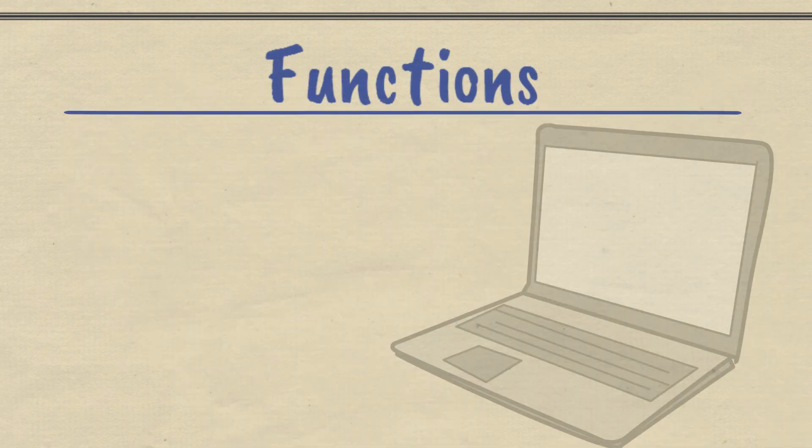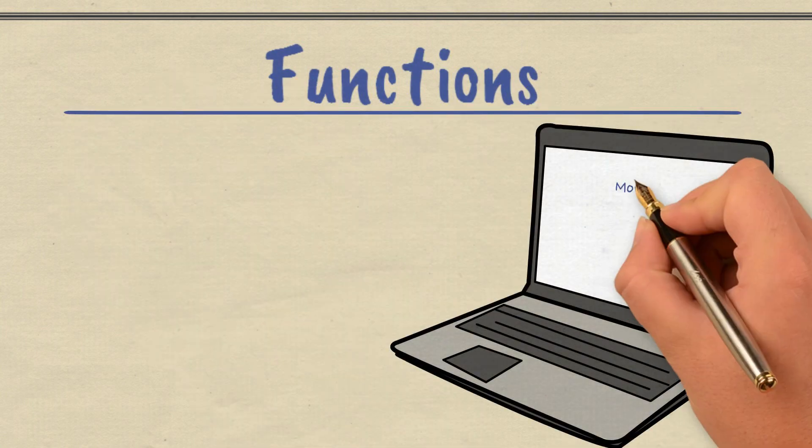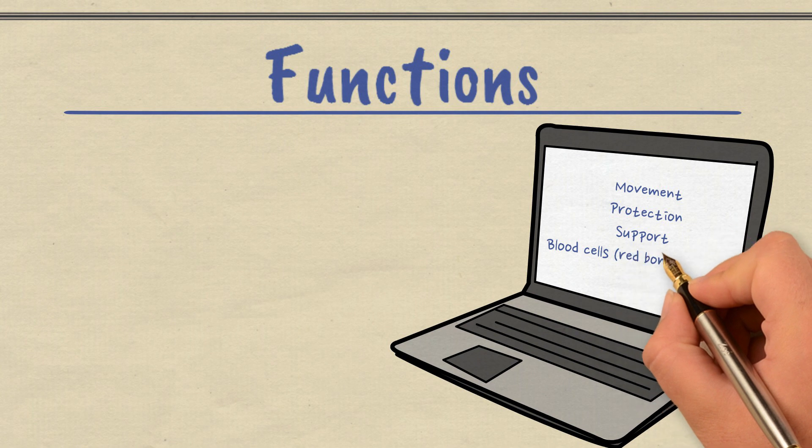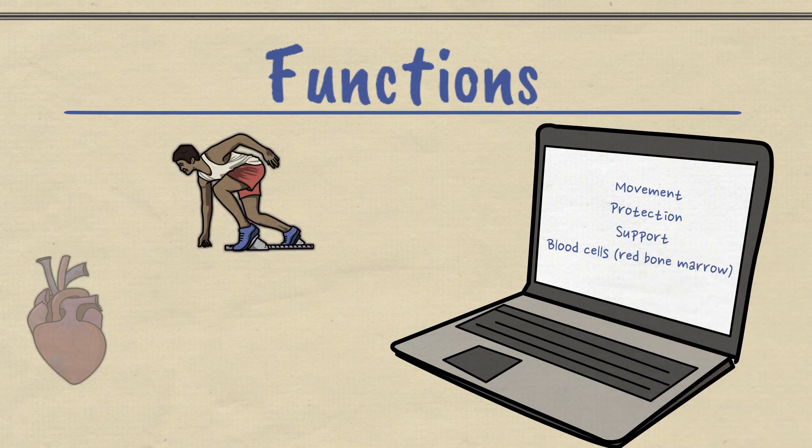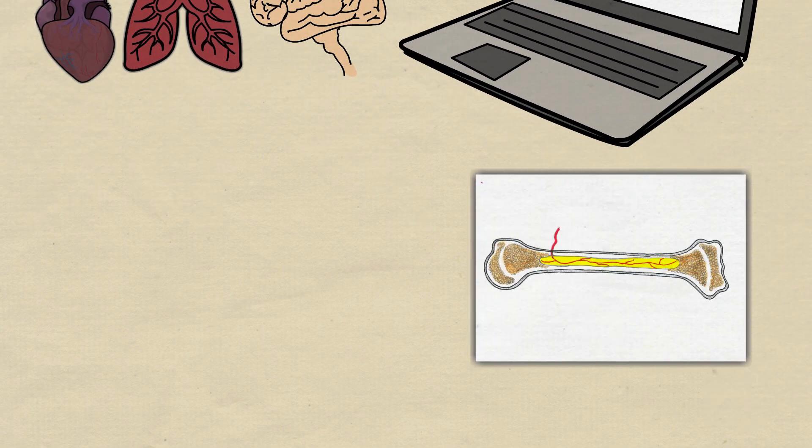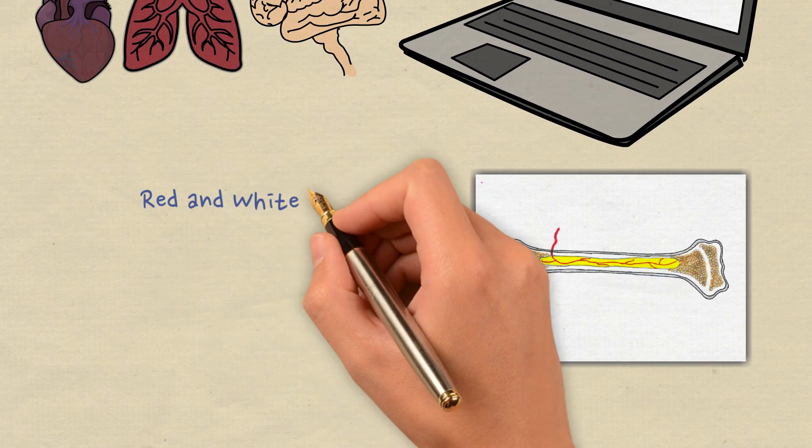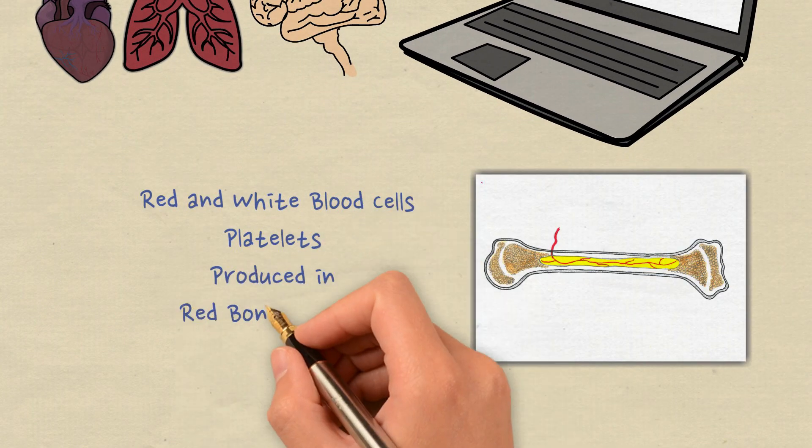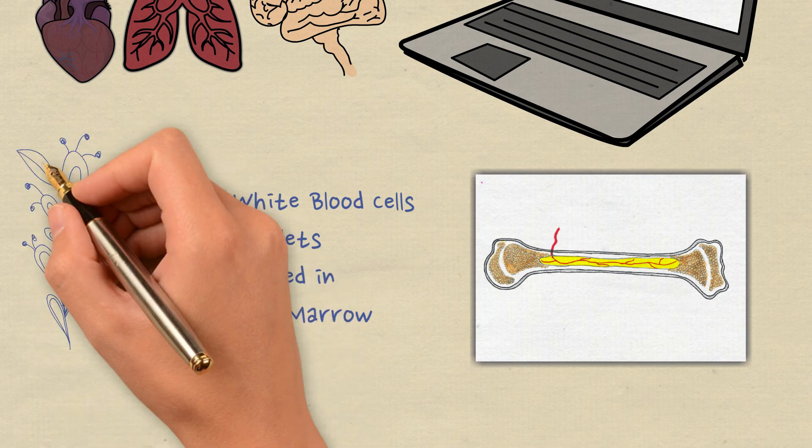So the four functions of the skeleton are movement, protection, support and the production of blood cells including the platelets. You know that those vital organs are all protected by bone, and you have to be very specific that it's in the red bone marrow where the red and white blood cells and the platelets are produced, and give specific bone examples.